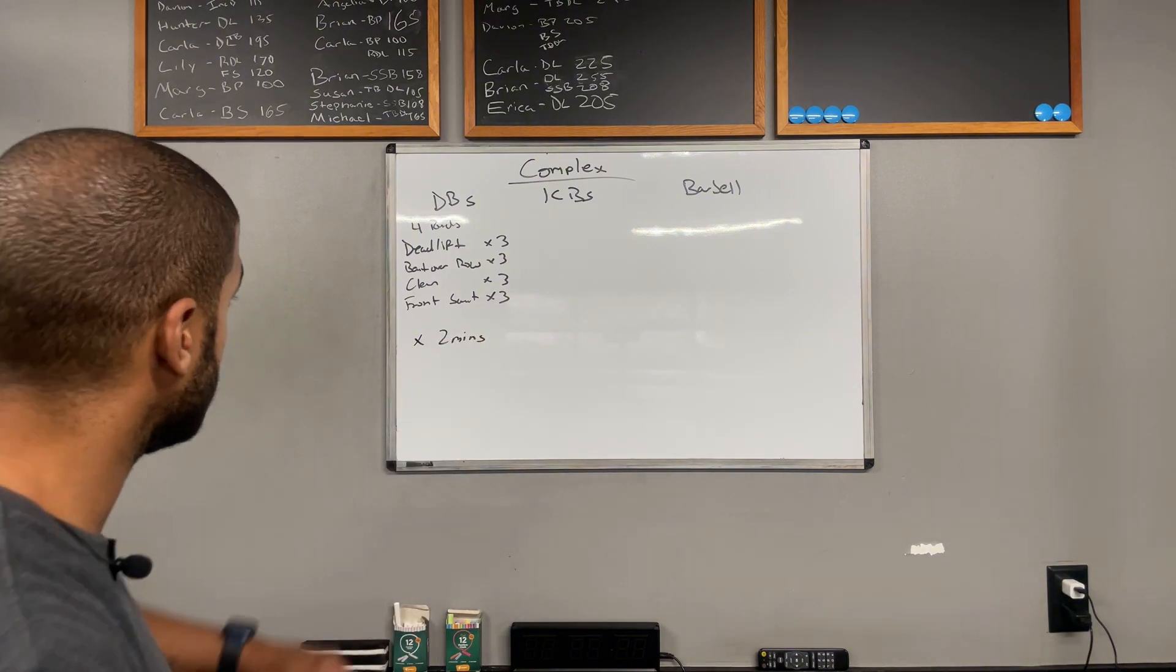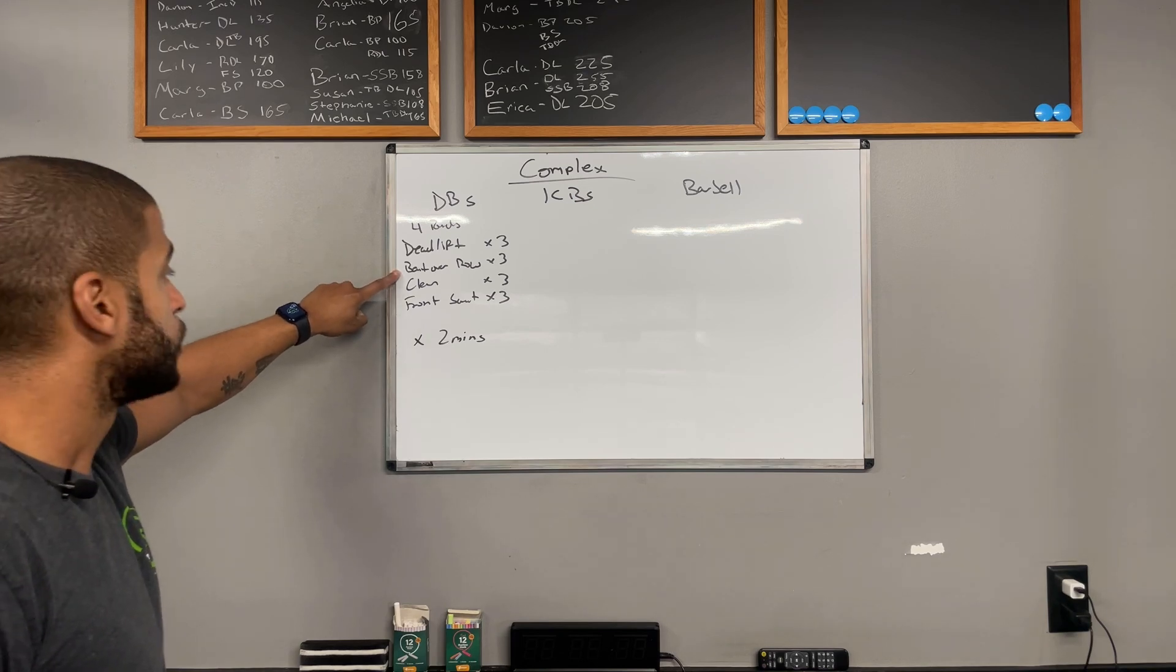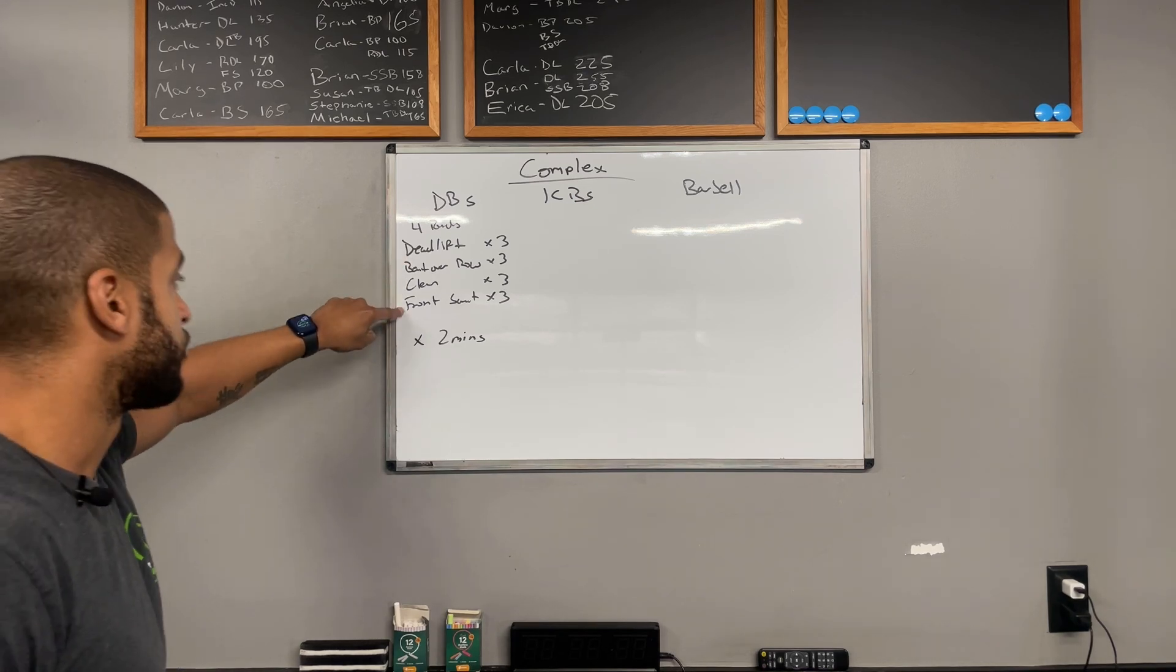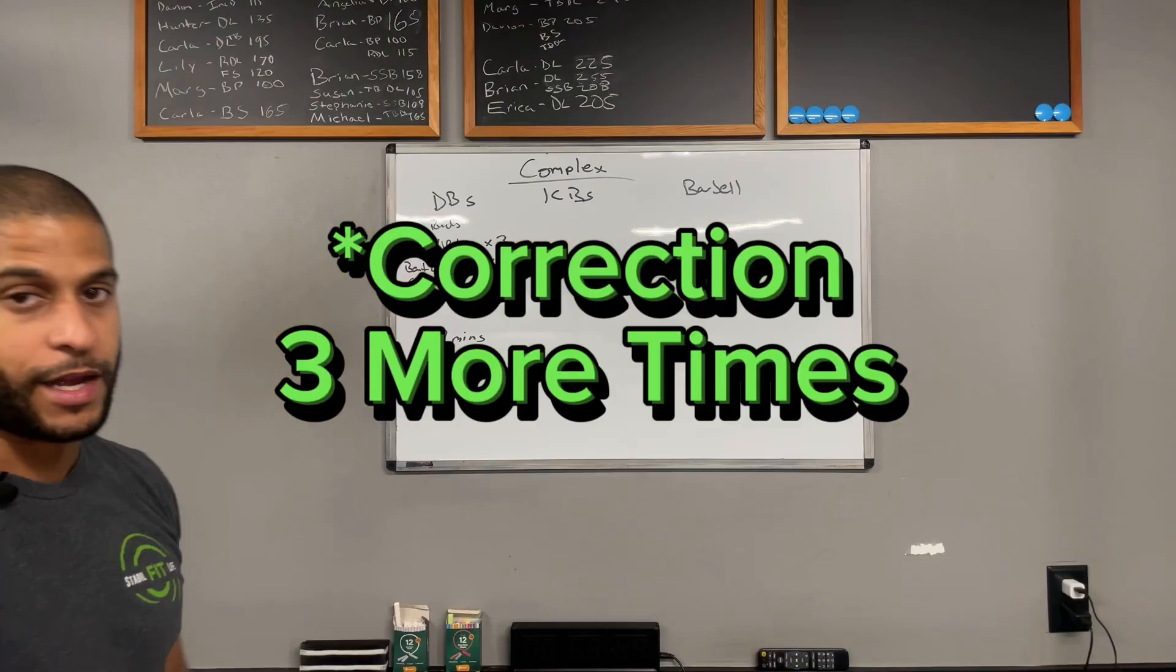And then let's say we'll rest for two minutes in each round. So what it'll look like is, you're going to do three deadlifts, three bent over rows, three cleans, three front squats, and you rest for two minutes. And you do that four more times.